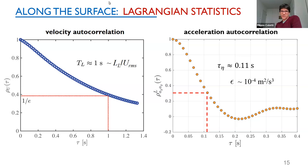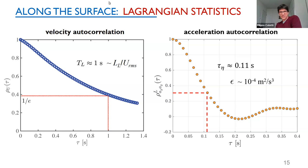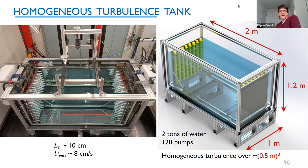One limitation of the open channel flow is the advective mean velocity: tracers exit the field of view in about one second. A zero-mean-flow facility is much more convenient for obtaining long trajectories. This is what we built at ETH last year, inspired by similar facilities with random activation of jets — Herman Mariano first proposed this design in water at Cornell and later Berkeley. Our facility has 128 jets — two panels of 64 jets each — activated randomly via PLC elements, which I can control individually.